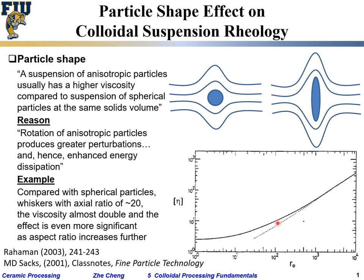For a slurry, there are different parameters you can think of to control flow behavior: solid loading, particle shape or isotropy, pH, supporting electrolyte — not just pH but you can add sodium chloride or other salts to change ionic strength — and polymer addition, polymer molecular weight, and polyelectrolyte. All these are different knobs you may use when handling a slurry. Here we only give you the principles.